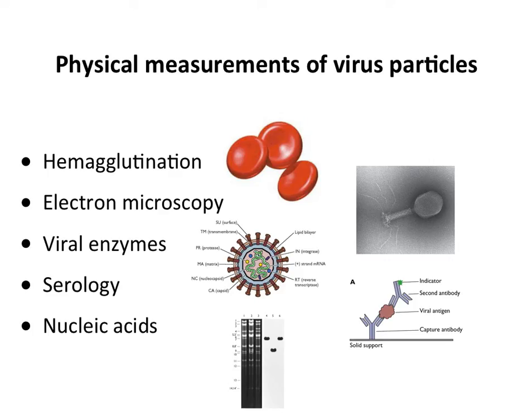For many viruses we can't conveniently measure infectivity — we can't do plaque assays or even limit dilution assays — so we are reduced to using other measurements. In some cases you can measure infectivity, but some of these approaches are more rapid. We'll talk about four of these today; there are five listed, but we won't talk about electron microscopy.